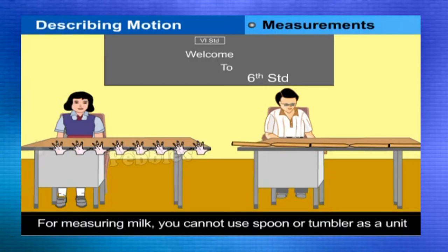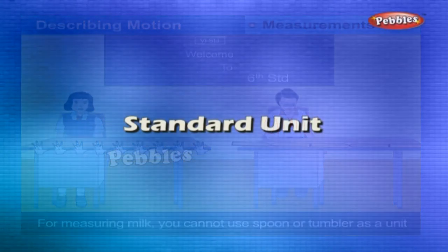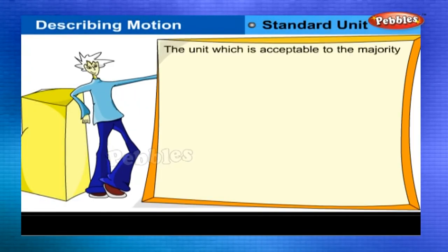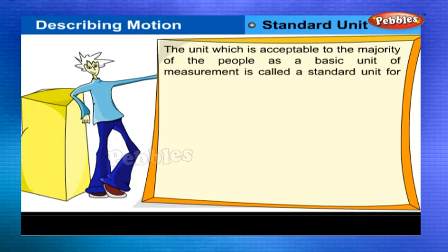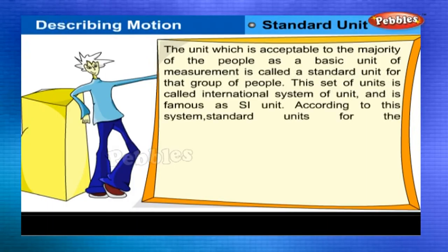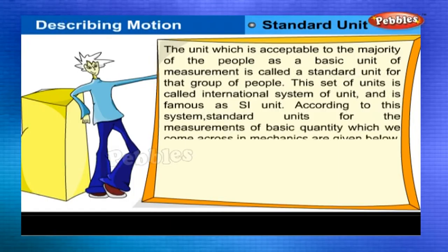Likewise, for measuring milk you cannot use a spoon or a tumbler as a unit. Standard unit: the unit which is acceptable to the majority of the people as a basic unit of measurement is called a standard unit for that group of people. This set of units is called International System of Units and is famous as SI unit. According to this system, standard units for measurements of basic quantity which we come across in mechanics are given below.